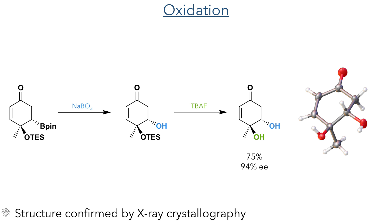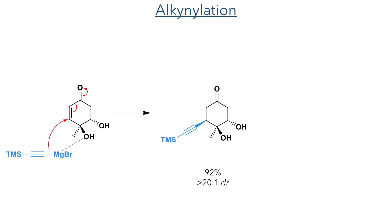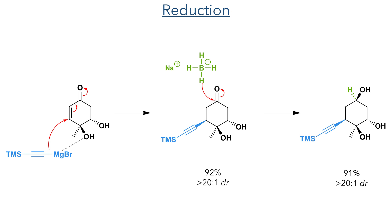The stereochemistry of this compound was determined using X-ray crystallography, which confirmed the anti-relationship between the two hydroxyl groups. The alkyne necessary for the Sonogashira coupling was then installed using a Grignard reaction. The Grignard reagent of TMS acetylene added to the conjugate position of the enone, producing the product in a 92% yield with a 20 to 1 dr. This was likely directed by steric hindrance from the methyl group on the bottom face of the molecule and coordination from the hydroxyl group, which guides the reagent to the top face. The ketone was then reduced using sodium borohydride to produce the triol in a 91% yield, again with a high stereoselectivity of over a 20 to 1 diastereomeric ratio.